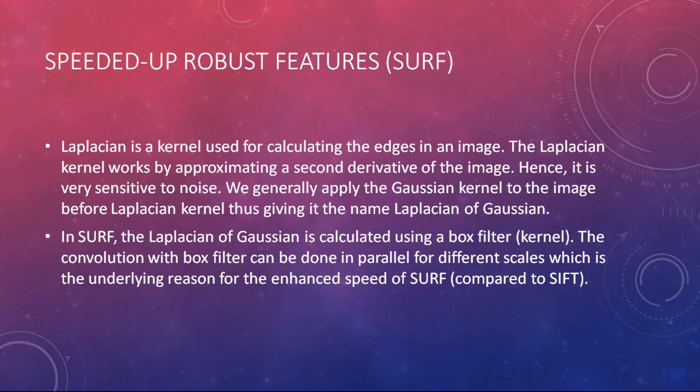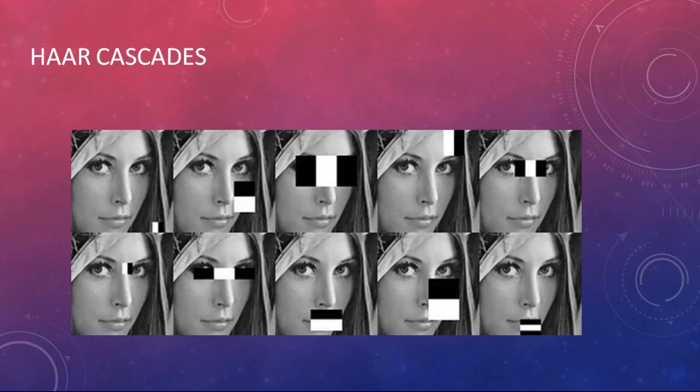The third feature extraction model is SURF — Speeded Up Robust Features. SURF uses the Gaussian kernel and Laplacian to understand and extract features from images, similar to SIFT. The key difference is that SURF performs computations in parallel rather than sequentially, which significantly increases processing speed. HOG, SIFT, and SURF are the three main techniques for feature extraction covered here.